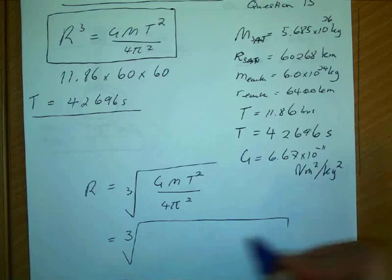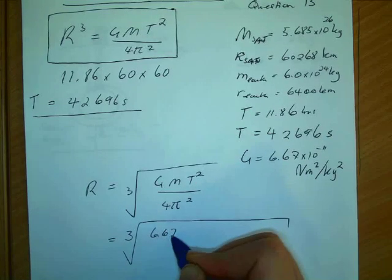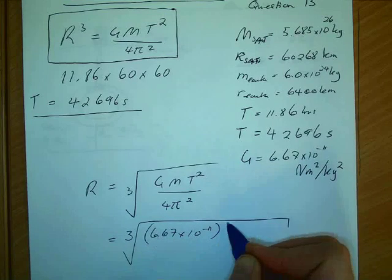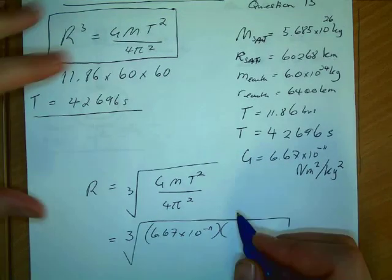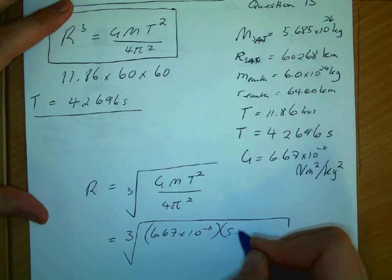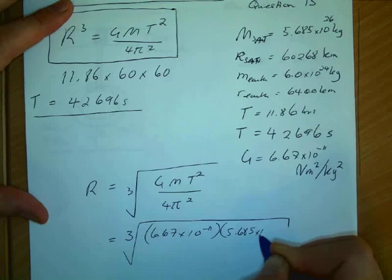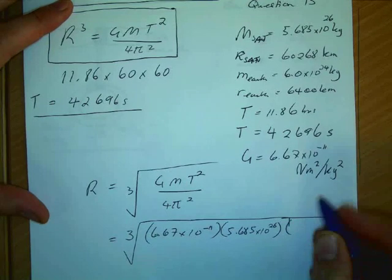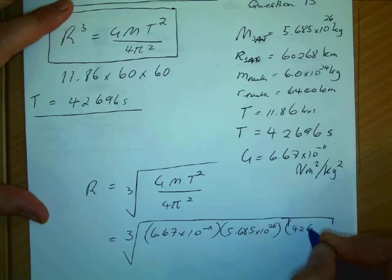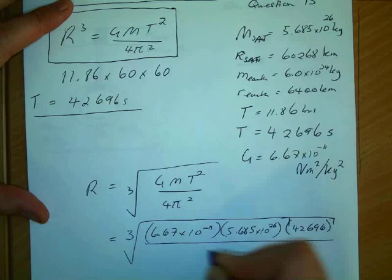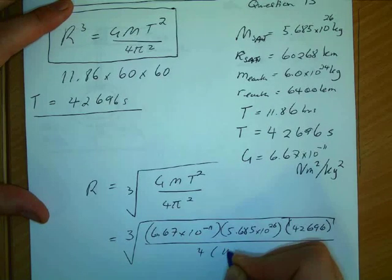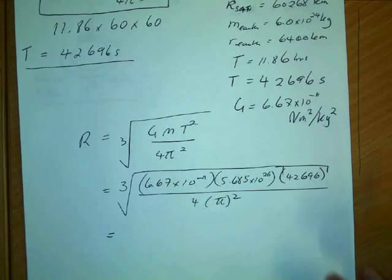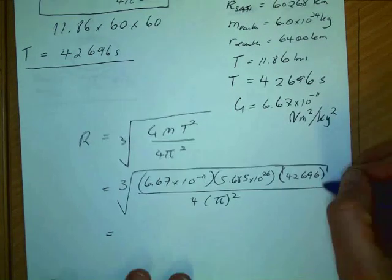So I plug all that in. The mass of Saturn is 5.685 times 10 to the 26. Didn't make that big enough. And the period is 4 times pi. And you should get 1.2 times 10 to the... That's period squared.